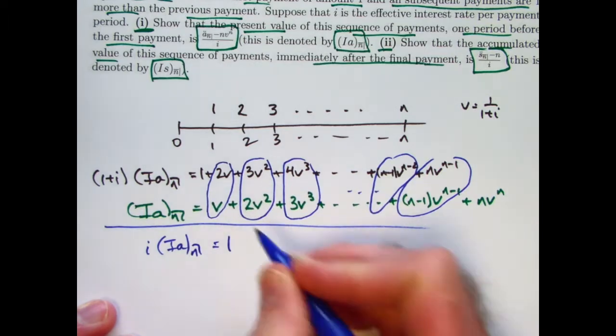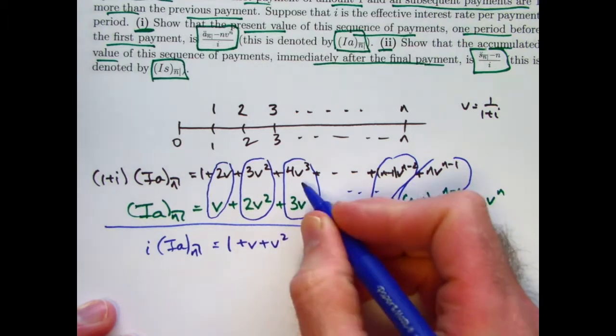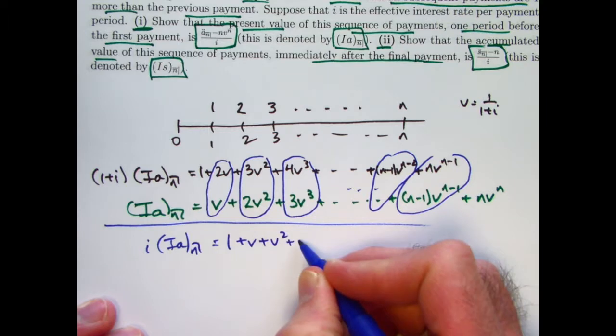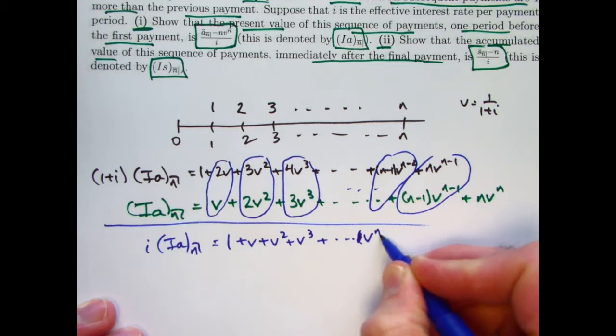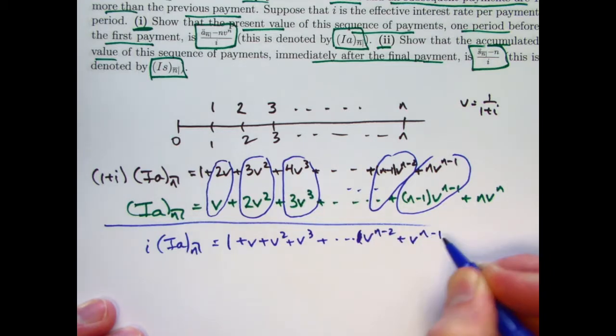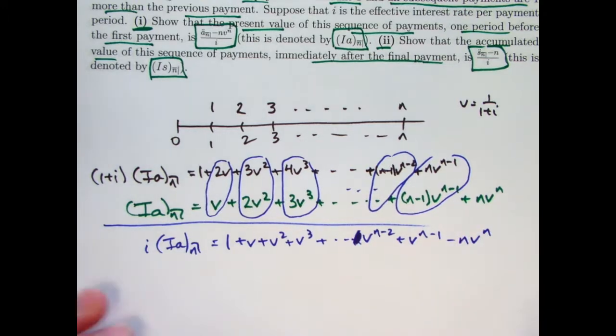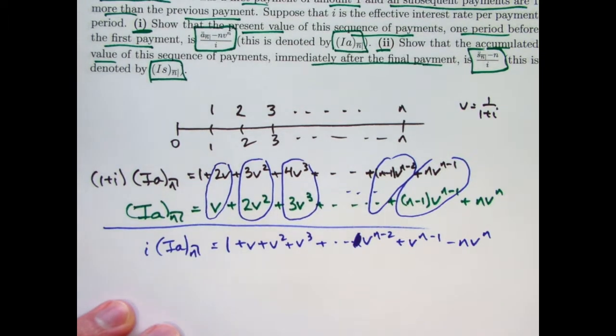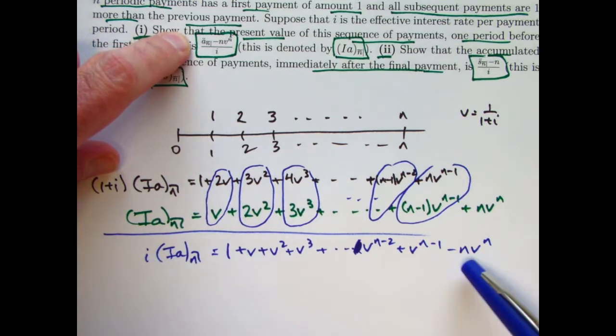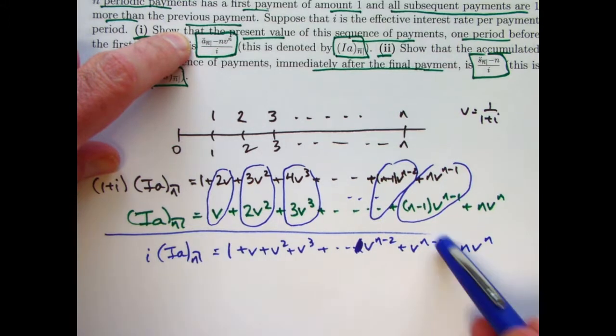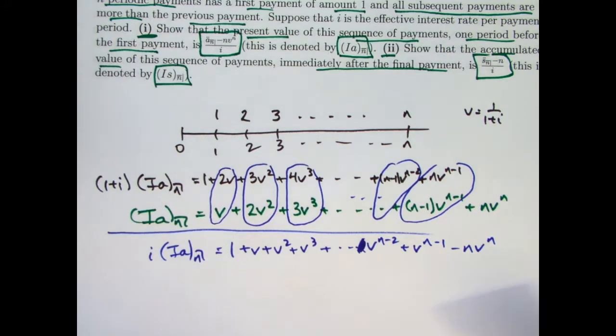This one doesn't cancel with anything. So we have a 1. 2v minus v is v. 3v squared minus 2v squared is v squared. 4v cubed minus 3v cubed is v cubed, etc. We'll get a v to the n minus 2 and a v to the n minus 1. And now subtract nv to the n. You see this starting to come into shape here to get the final answer. We are going to divide both sides by i. Here we see an nv to the n. Is this thing that's left over here, is that a_n double dot? The answer is yes it is.